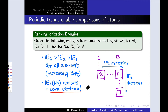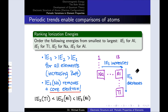Putting this all together: the smallest ionization energy is IE1 of thallium — it's at the bottom of group 13, and it's a first ionization energy. Next is IE1 of aluminum, which is higher up group 13, so that electron is a little harder to remove. Then comes IE3 of aluminum, since it's harder to remove an electron from Al2+ to make Al3+ than from neutral aluminum to make Al+. Finally, IE2 of sodium is much the highest because all three others involve removing valence electrons, whereas IE2 of sodium involves removing a core electron.